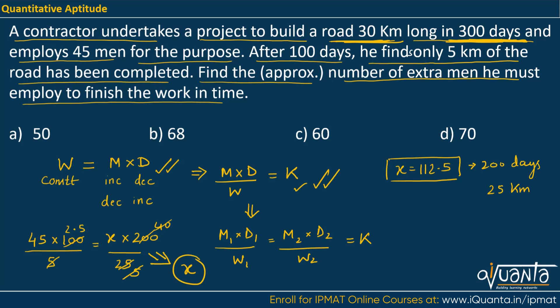So how many extra men were employed? 45 were already there. So extra men will be given by 112.5 minus 45, which gives us 67.5. So we have to find out the approximate number of men. So it will be equal to 68. So option B will be the correct answer here.